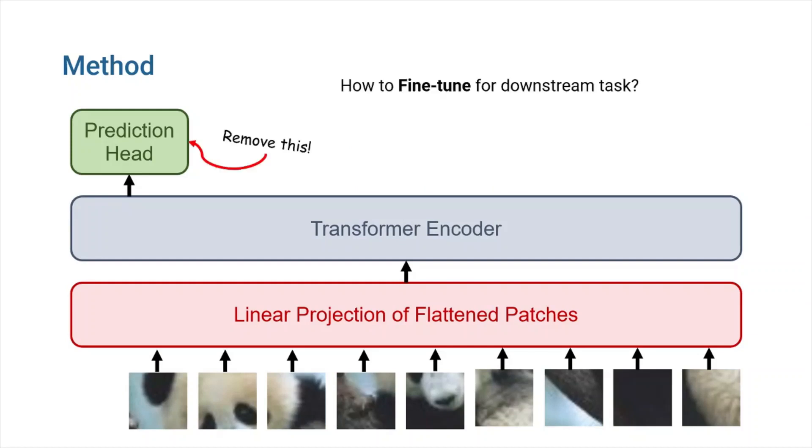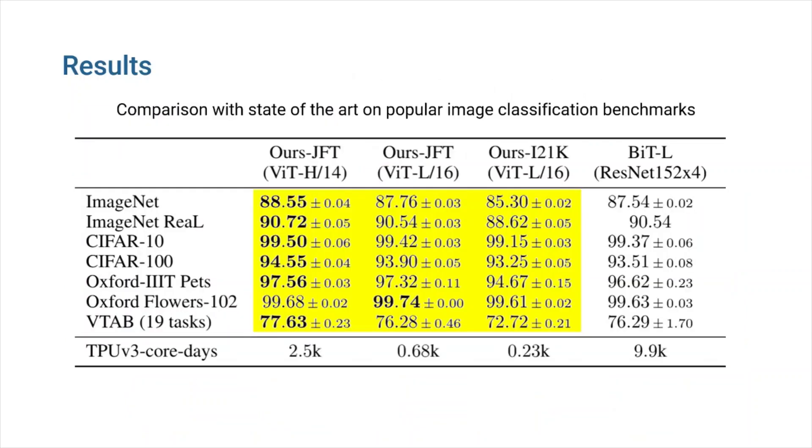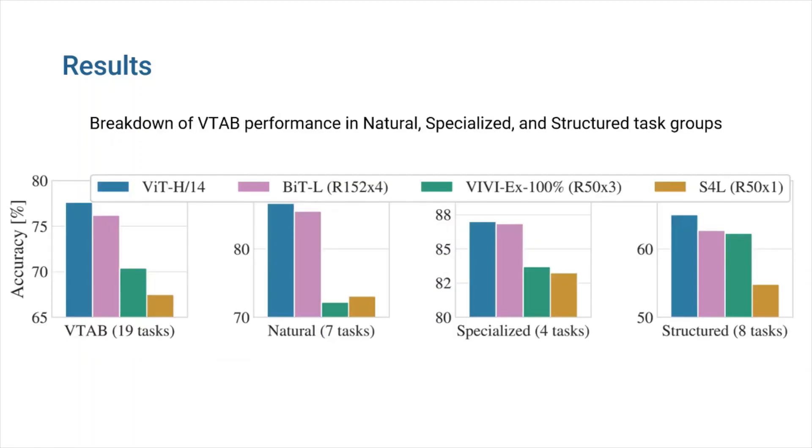If you'd like to fine-tune it for a downstream task, you simply remove the prediction head and attach a zero initialized feed-forward layer instead. As you can see here, vision transformers perform better than a very big CNN-based network, while being faster and more efficient in terms of computational costs. Transformer models also outperform CNN-based models on visual task adaptation benchmarks.